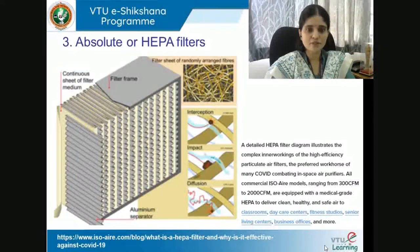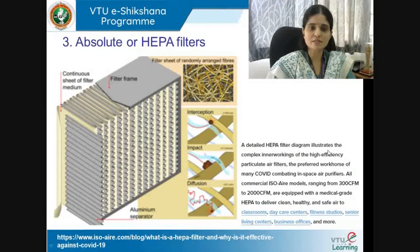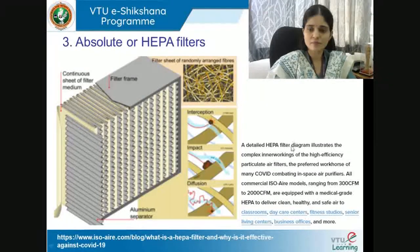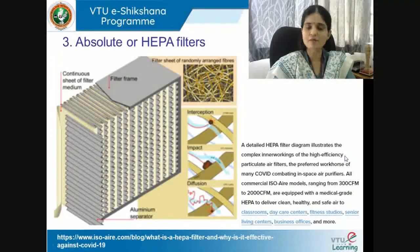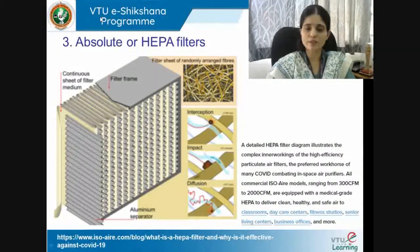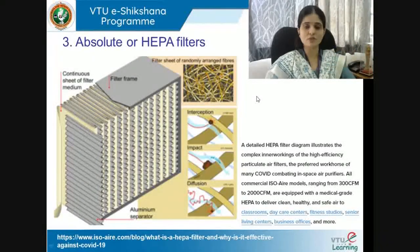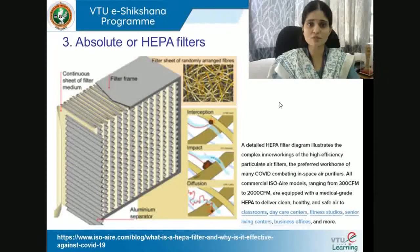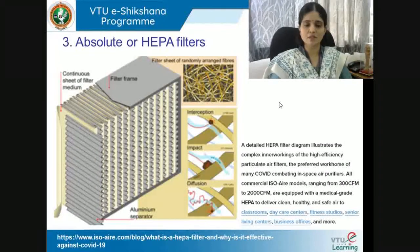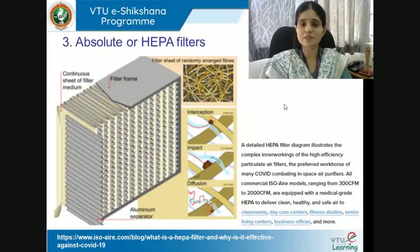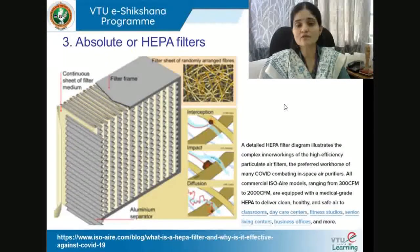Looking at a HEPA filter diagram, it illustrates the pleating and corrugated sheets, showing the complex inner workings of the high efficiency particulate air filter — described as the preferred workhorse of many COVID-combating in-space air purifiers. There are three ways a dust particle gets filtered in HEPA: interception, impact, and diffusion. These filters are safer to use in classrooms, daycare centers, fitness studios, senior living centers, and business offices.